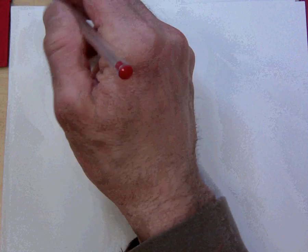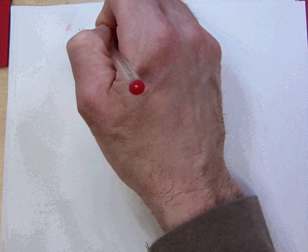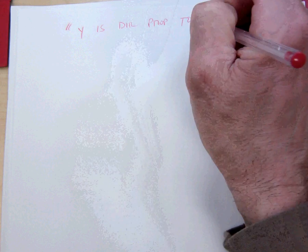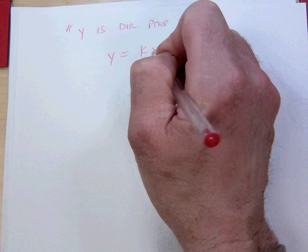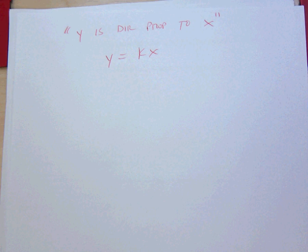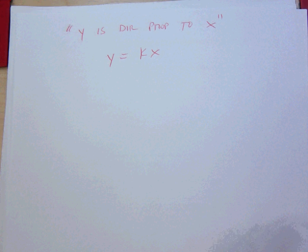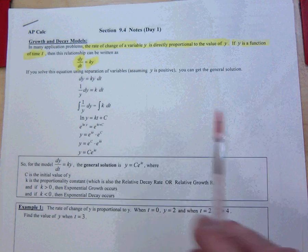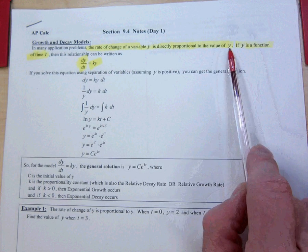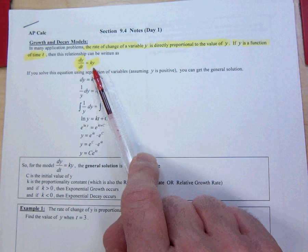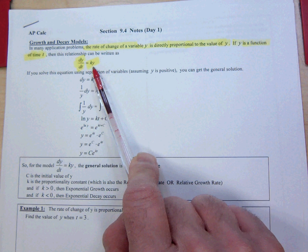Let's go back to Algebra 1 for a minute — direct and inverse variation. When you saw 'y is directly proportional to x,' you wrote y equals some constant k times x. It's no different here. The rate of change, which is a derivative, is directly proportional to y — in other words, equals a constant times y. So you can read that and write that differential equation. That's the first step.